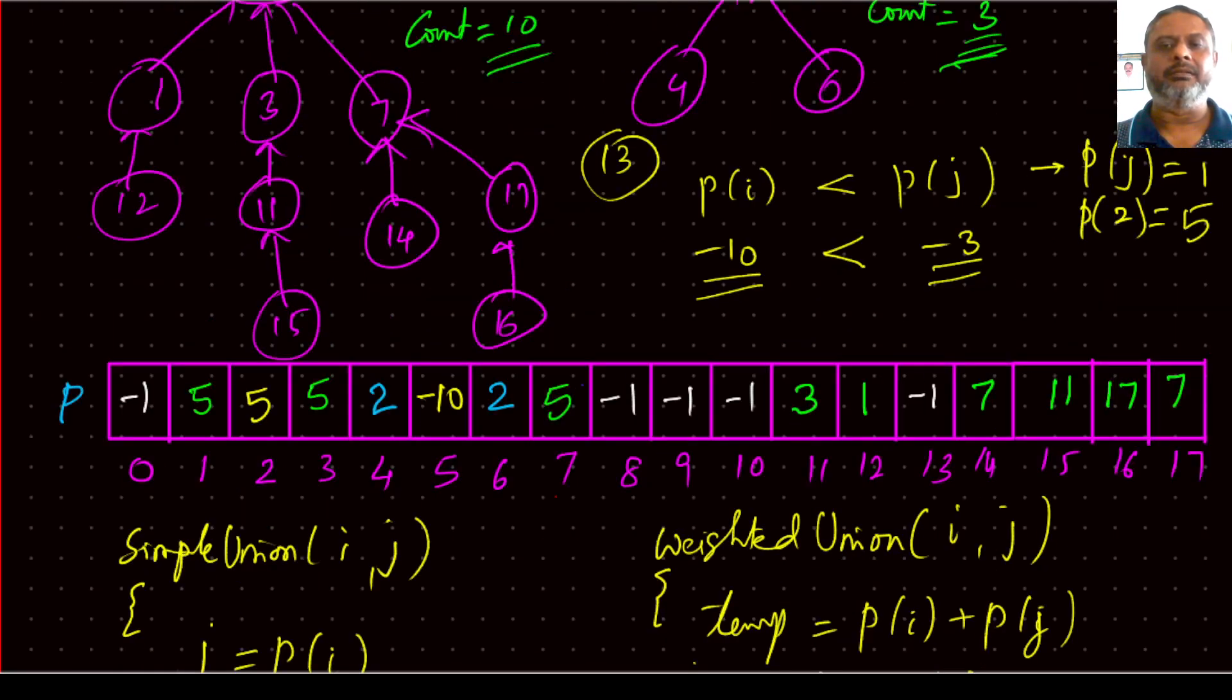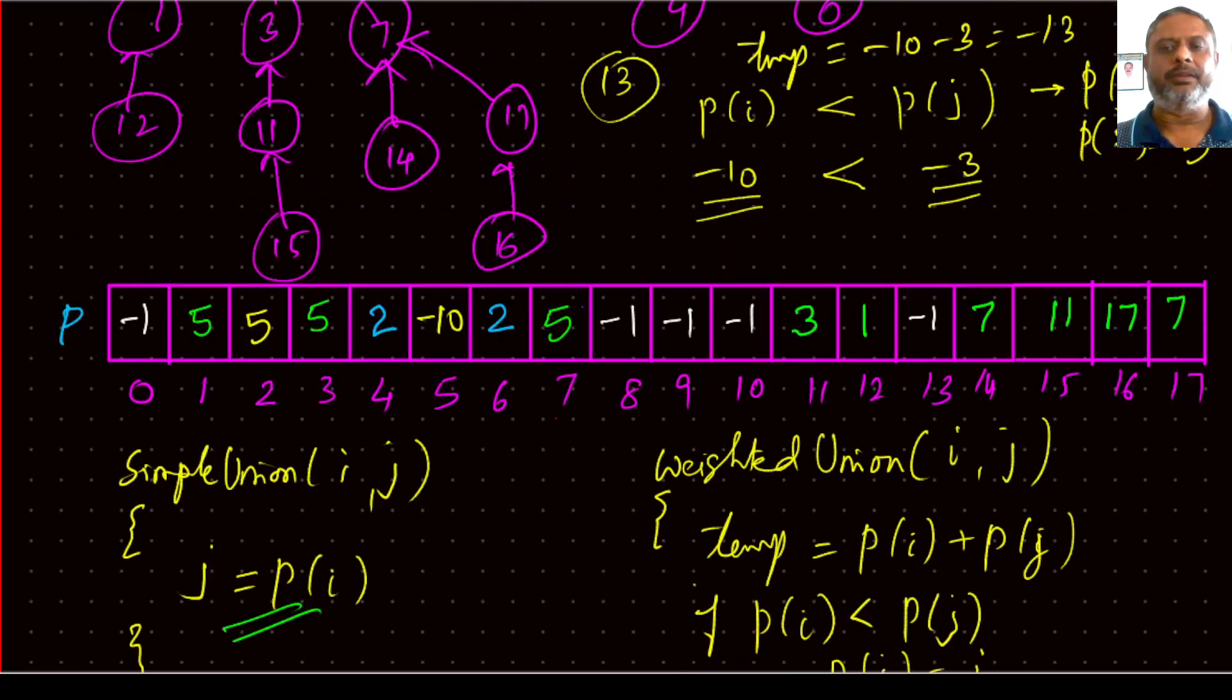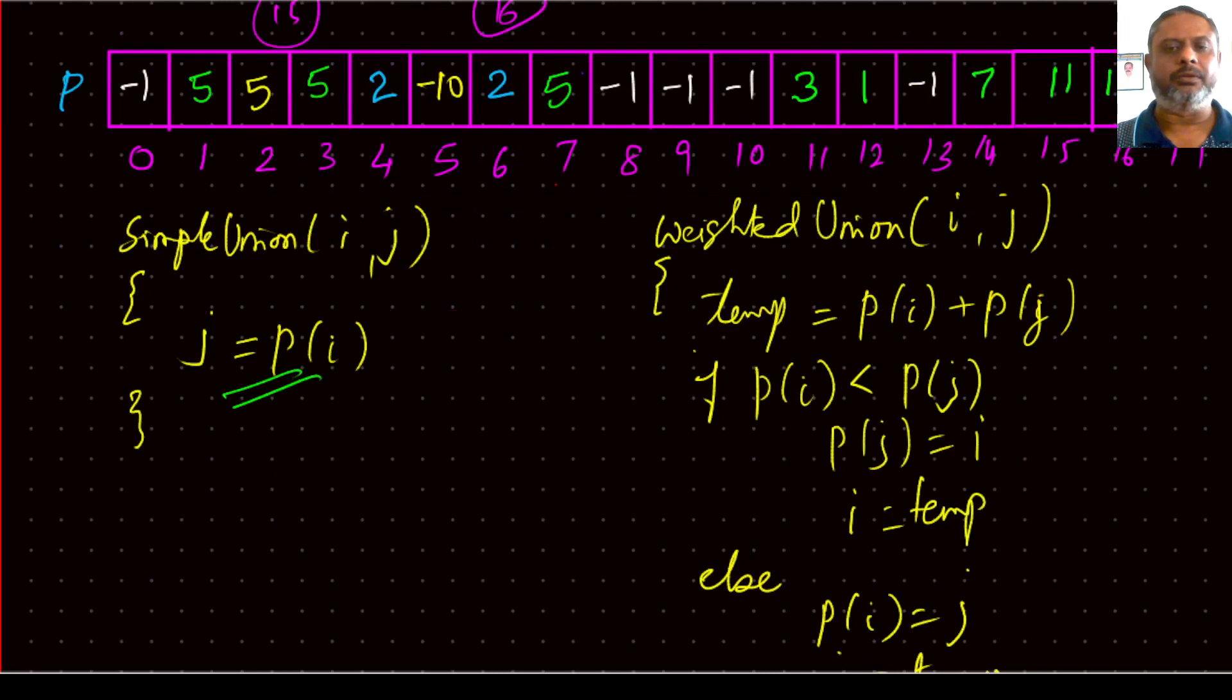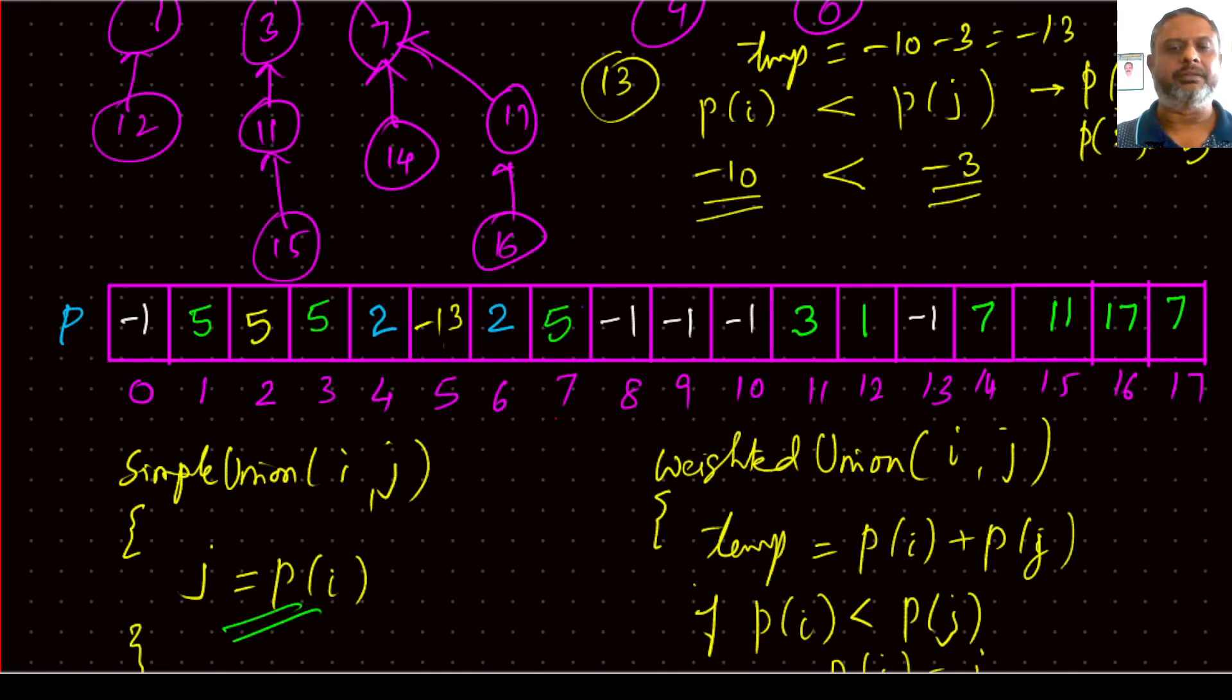So when we started, temp is equal to minus 10, minus 3, that is minus 13. Then we found p of i is less than p of j. Yes, p of i is less than p of j. Therefore, p of j is made equal to i. i is 5. So 5 is written here. And then the place of i instead of minus 10, minus 13 is written. So that's it. That's as simple as that.